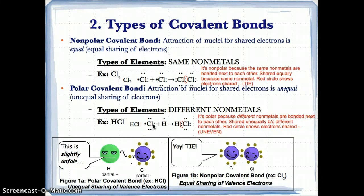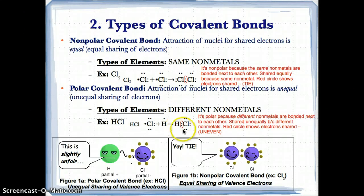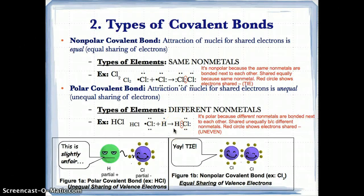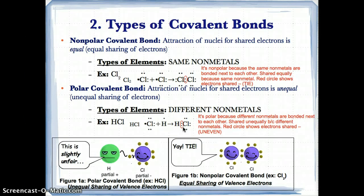In HCl, the bond forms when the lone single electron on H and the lone single electron on Cl pair up in the middle. There are six electrons on the Cl atom not in the middle, and two valence electrons in the middle. Adding those gives eight valence electrons for Cl, so Cl is stable.